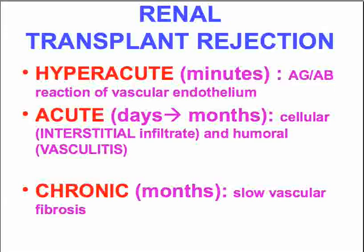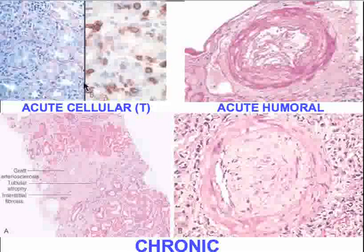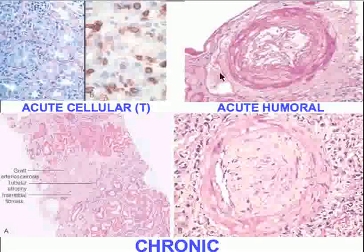In the third type of rejection, which is very, very common, any graft that lasts more than a few weeks or months — 50% of them will eventually fail. It's a slow process, and like many slow processes, the end result is fibrosis. In the acute cellular phase of rejection, we can see renal tubules infiltrated by lymphocytes. In the acute humoral pattern of rejection, we can see a reaction against donor blood vessels by antibodies causing a pattern of vasculitis.